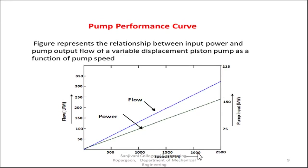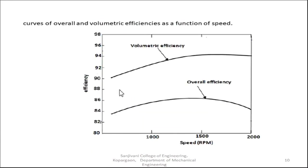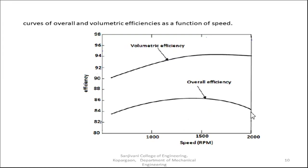The performance curves also show efficiency against speed. As speed increases, volumetric efficiency increases. However, as speed increases, mechanical efficiency drops due to mechanical losses. As a result, the overall efficiency — which is the product of volumetric efficiency and mechanical efficiency — rises up to a certain level and then drops. This drop is caused by mechanical losses. Remember: overall efficiency = volumetric efficiency × mechanical efficiency.